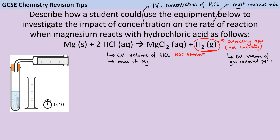Students often write that they're going to control the temperature of the reaction. That is a sensible thing to control, and for really perfect data you would need to control it. But just be aware that doing everything at room temperature is not the same as controlling the temperature. If you're going to have temperature as a control variable, you need to explicitly say you're putting it in a water bath, as you would in enzyme investigations in GCSE biology. If you're not going to do that, I would steer away from mentioning temperature at all.